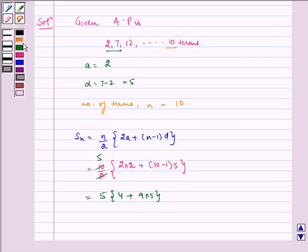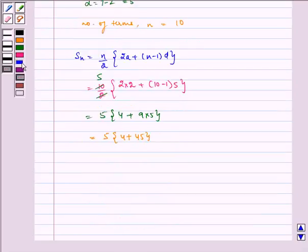This simplifies to 5 multiplied by 4 plus 9 multiplied by 5, which is equal to 5 multiplied by 4 plus 45, which equals 5 multiplied by 49, which is equal to 245.